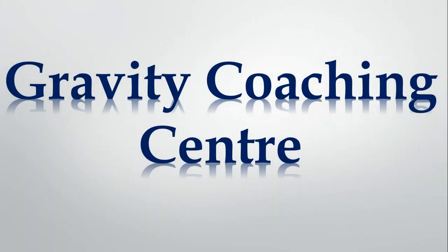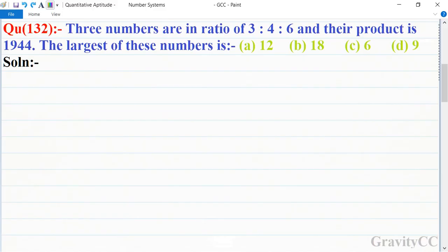Welcome to our channel Gravity Coaching Center. Question number 132: Three numbers are in the ratio of 3 is to 4 is to 6 and their product is 1944. So the largest of these numbers is which one?